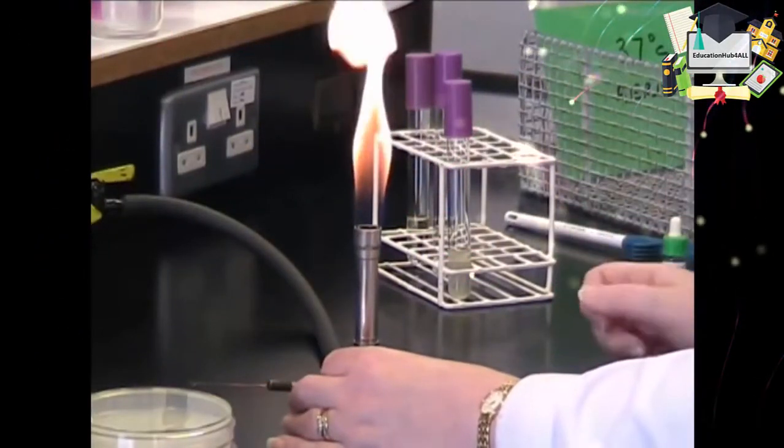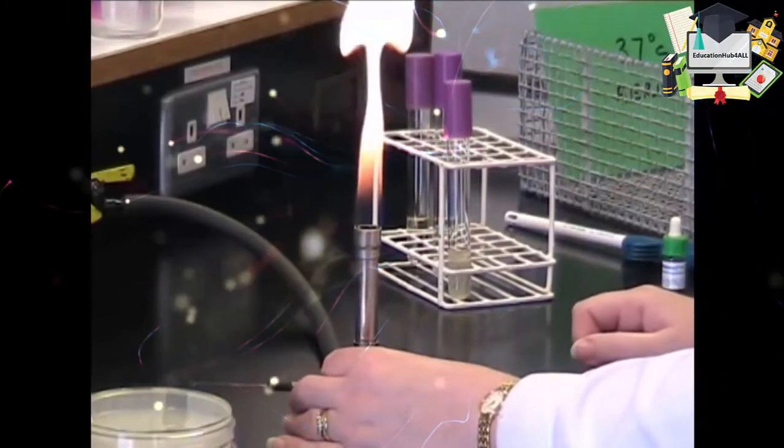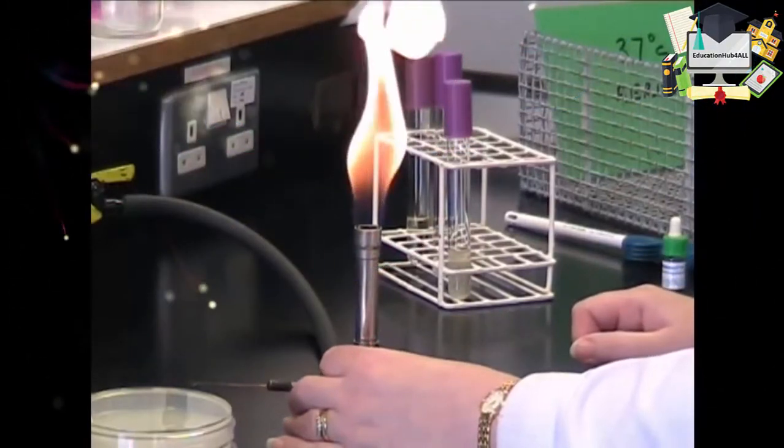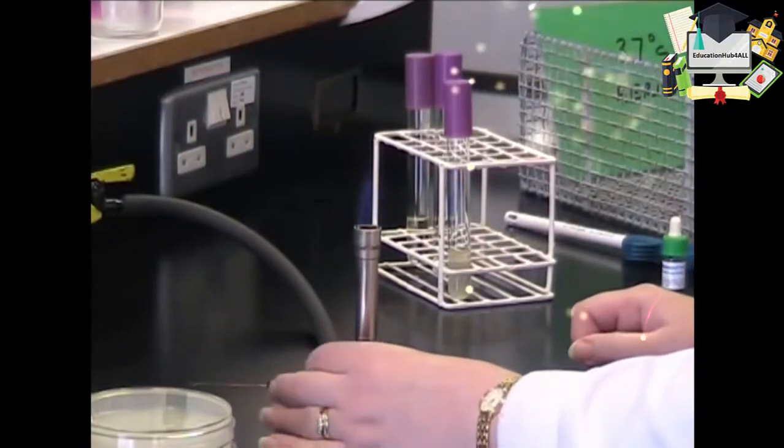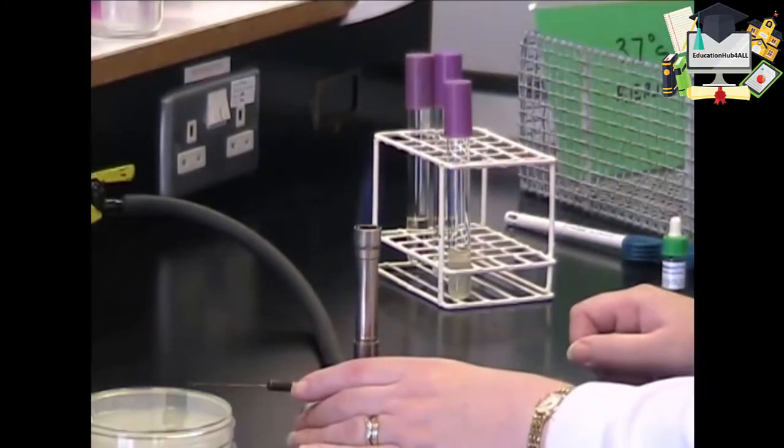When the air hole is closed, the gas and the flame will be cold and yellow. When you want to use it, open the air hole up and you'll get a nice bright blue cone of gas.